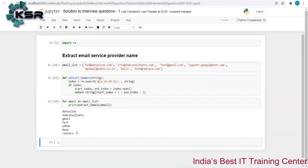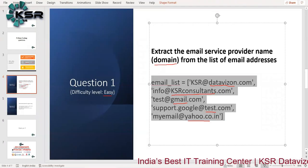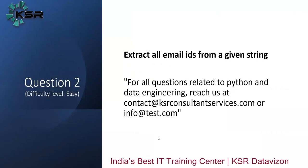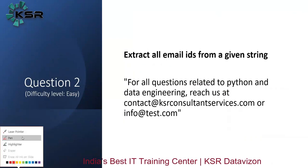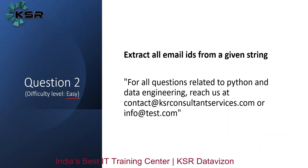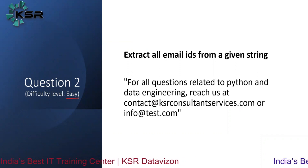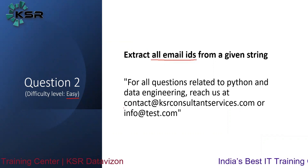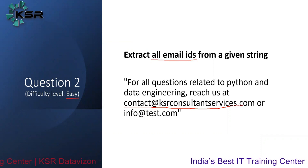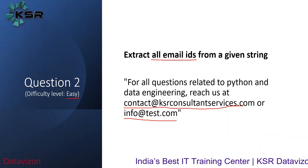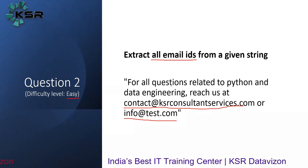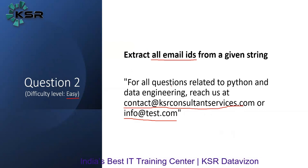Let's move to the second question — the difficulty level is again easy. Previously we extracted the domain name from a list of email addresses. Now the task is: extract all email IDs from a given string. In this example, the string contains 'contact@ksrconsultantservices.com' and 'info@test.com' — we have to extract both email addresses. Pause the video now and try it on your own.